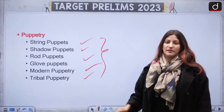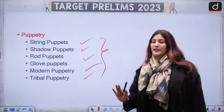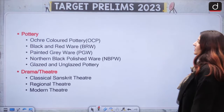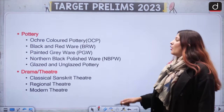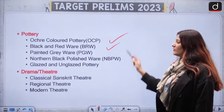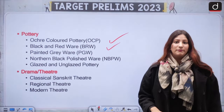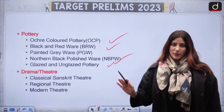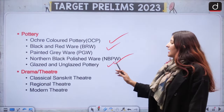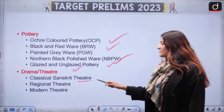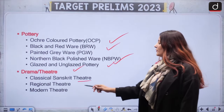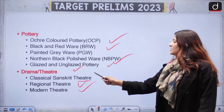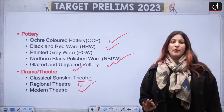This is of course the static part, but be very careful if any puppetry other than these is also in the news. In pottery, we have Aqua coloured pottery, Black and Red Ware, Painted Grey Ware, Northern Black Polished Ware, and Glazed and Unglazed pottery. In Dramas and Theatres we have Classical Sanskrit theatre, Regional theatres, and Modern theatres — especially the first two are very important.